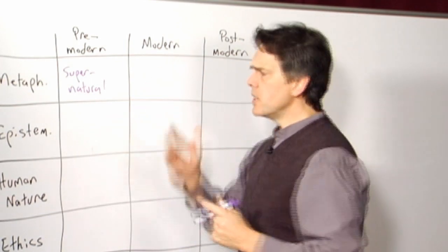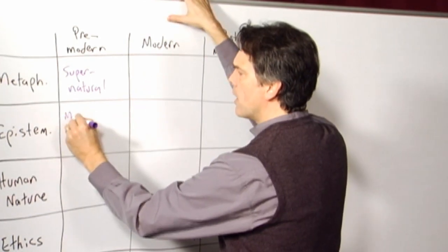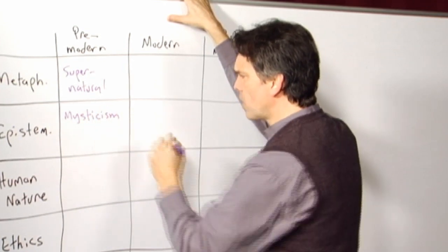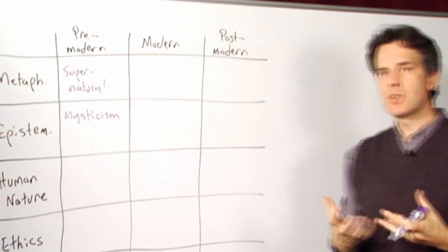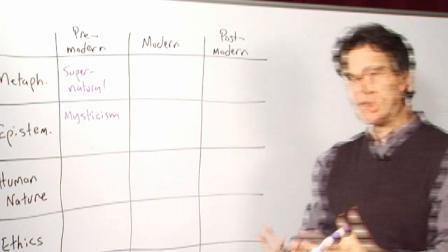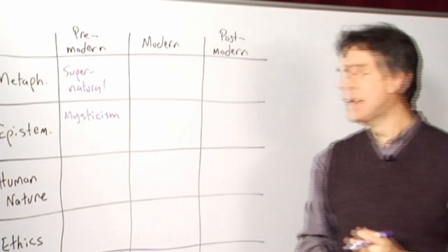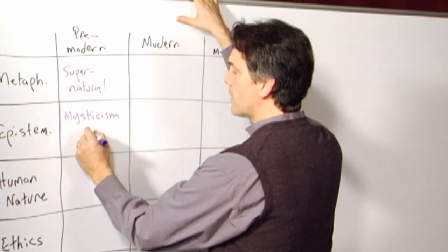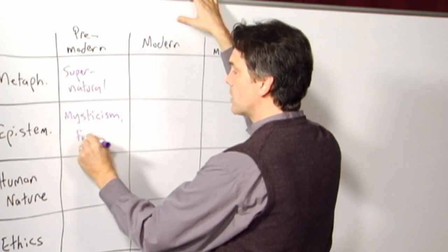Epistemologically, the dominant institutions are reliance on mystical experiences as captured in revelations, as captured then in holy scriptures, and those then are handed down through the tradition, and everyone in the tradition is expected,